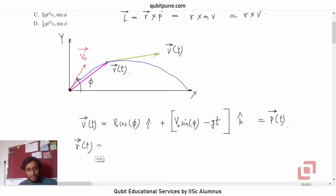Can we get the position vector now? Of course. It will be V naught cos phi t because along x, the particle is undergoing uniform velocity motion. So it will just be Vt i cap plus